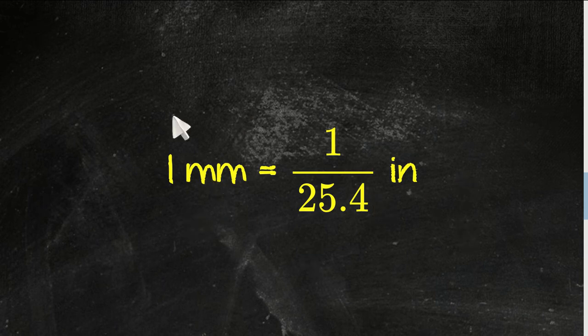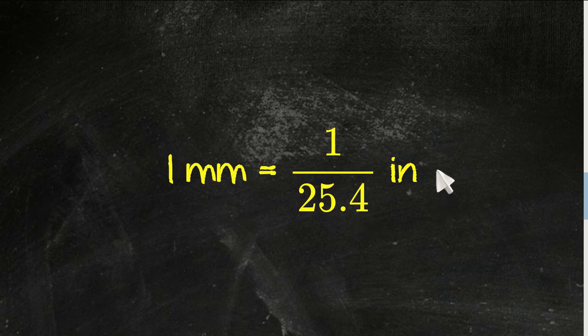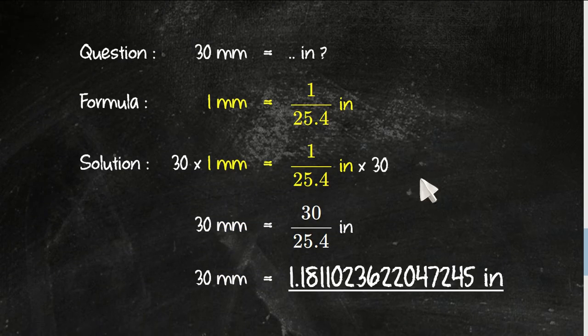1 millimeter equals 1 over 25.4 inches, and this is the answer section.